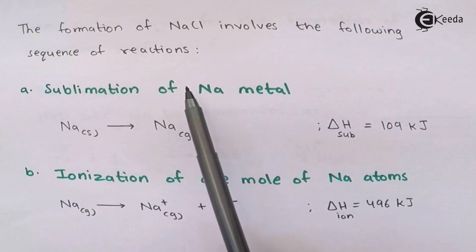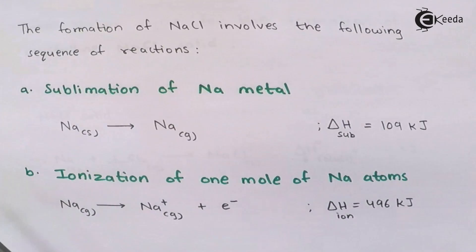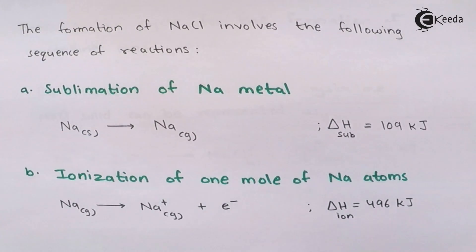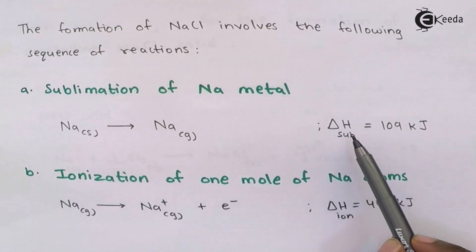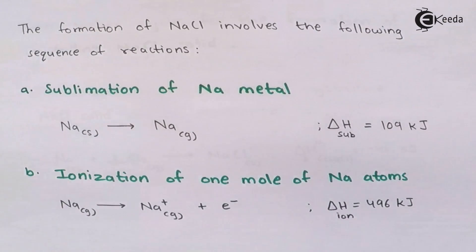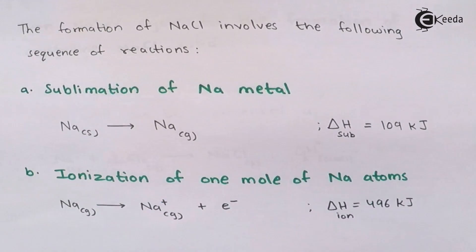Step A: Sublimation of sodium. The first step is sublimation of Na metal. Since Na is a solid, we have to convert it directly from solid state to gaseous state by sublimation. The enthalpy of sublimation, ΔH_sub = +109 kJ, meaning 109 kJ of energy must be supplied to convert solid sodium into gaseous sodium atoms.